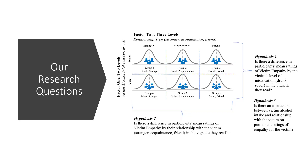For our walkthrough, we'll be testing three different hypotheses. First, is there a difference in participant mean ratings of empathy by the victim's level of intoxication — drunk versus sober? Second, is there a difference in mean empathy ratings by relationship with the victim — stranger, acquaintance, or friend? Third, is there an interaction between victim alcohol intake and relationship with the victim on participant ratings of victim empathy?